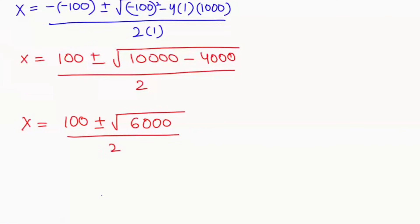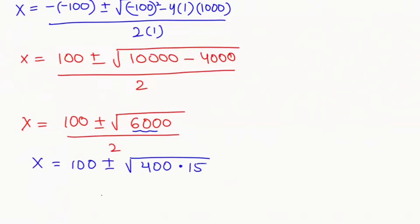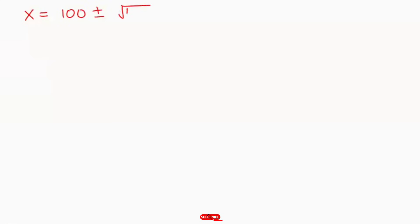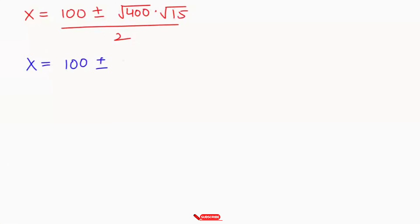Now in the next step I will split 6000. x equals 100 plus or minus root of 400 times 15, over 2. In the next step I will apply the radical product rule: the nth root of a times b can be written as nth root of a times nth root of b. So x equals 100 plus or minus root of 400 times root of 15, over 2.